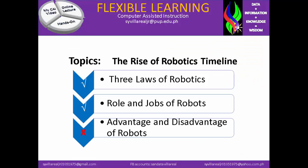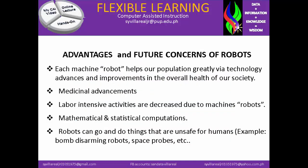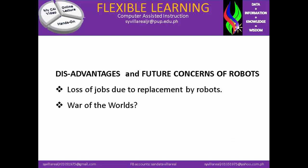Now let's move on to the last topic: Advantage and Disadvantage of Robots. The advantage of robots is that each machine robot helps our population greatly via technology advances and improvements in the overall health of our society, including medicinal advancement. Also, labor-intensive activities are decreased due to machine robots. Robots can go and do things that are unsafe for humans, e.g. bomb disarming robots, space probes, etc. Disadvantages include loss of jobs due to replacement by robots, and concerns about conflict.